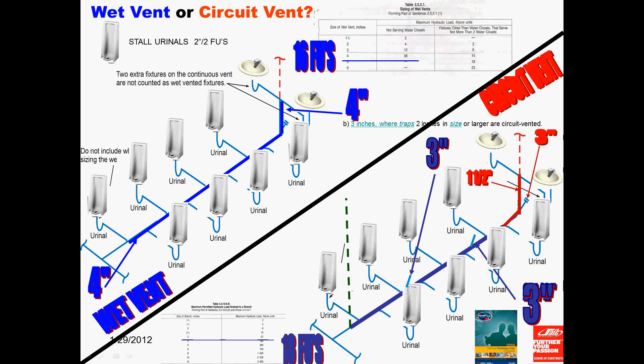we could use its stack vent or its continuous vent as our alternate relief vent, which means we might not even have to put a relief vent in, in some cases, which means we only have one vent upstream of the circuit vented branch, which is another advantage of circuit venting.